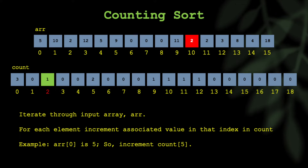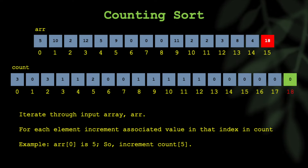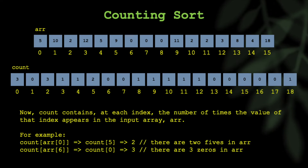I'm going to speed this up because I believe you get the idea. The count array keeps track of how many times each value in the input array appears. When that's completed, you should now have the counts of each value in the count array.